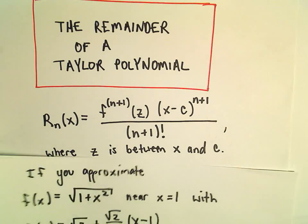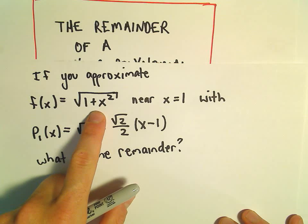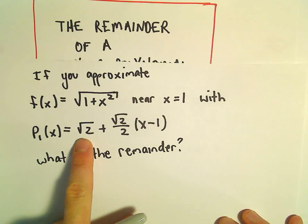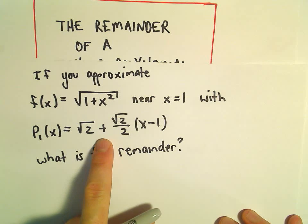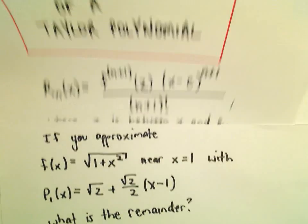Alright, so one more little example here. Suppose we approximate the square root of 1 plus x squared near x equals 1 with the polynomial square root of 2 plus square root of 2 over 2 times x minus 1. Again, we want to know what the remainder is.